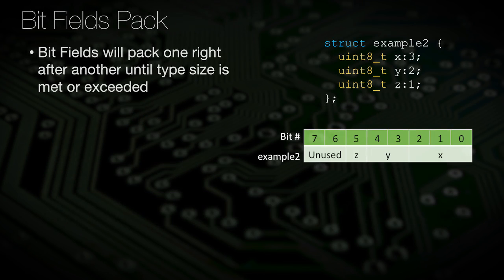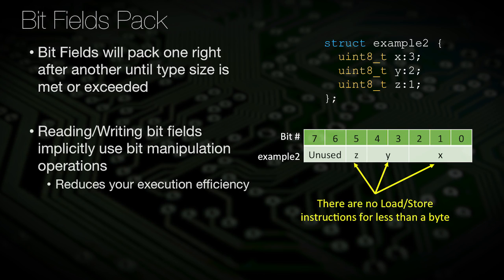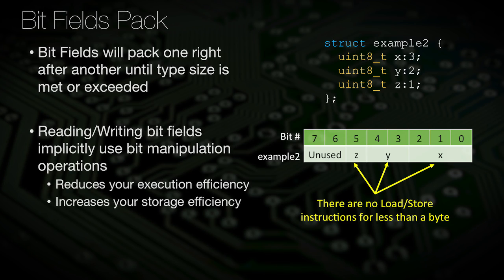The packing of bits is analogous to the packing of a structure. Instead of allowing the compiler to align certain data types at specific memory locations, each variable is placed one right after another. This has two core vulnerabilities. First, this makes reading and writing to a packed data structure more difficult — there are more instructions needed to perform the unaligned access and thus decreases program efficiency. Secondly, this will increase our storage efficiency, meaning more data can be grouped together and result in the need for less memory.